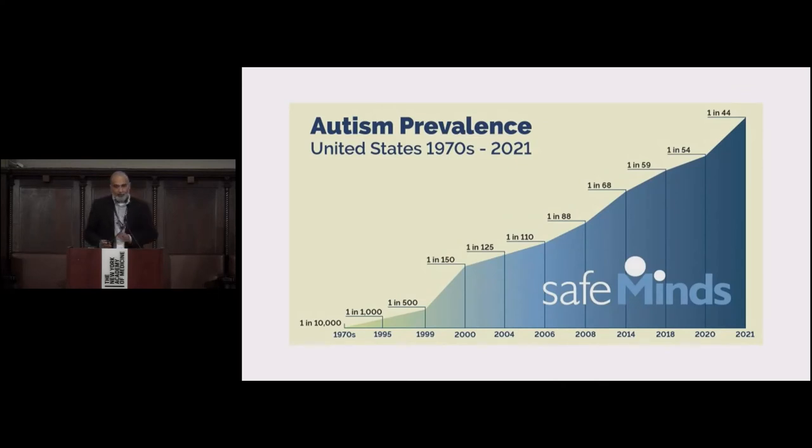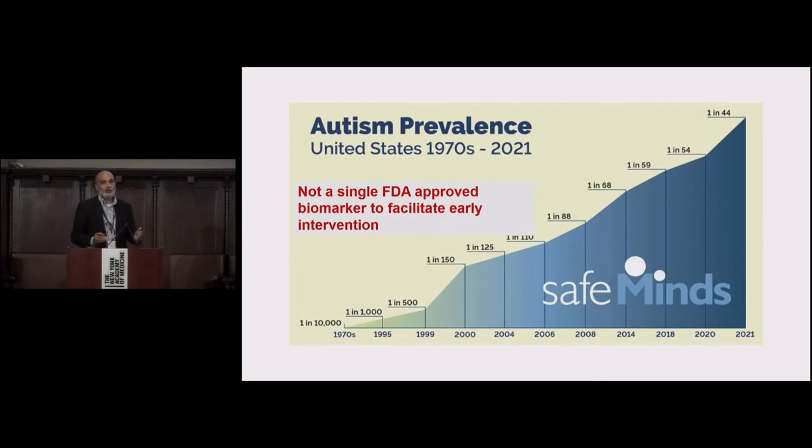The year I was born is roughly on your left here. If you move forward, it's gone from a prevalence of one in 10,000 to one in 44. A lot of that is due to better diagnostics, better awareness, but some of that is a real increase. So it can't just be genomics. Environmental medicine must play a part in studying autism spectrum disorder. What is surprising is around the world, there is no approved biomarker. The FDA has not approved a single biomarker.